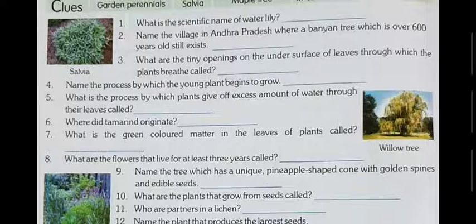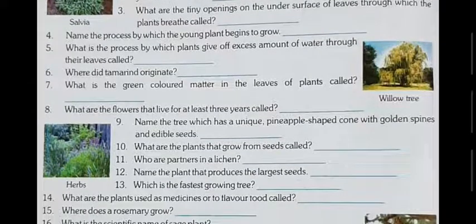Question number six: where did tamarind originate? Most of you may not know the meaning of tamarind — tamarind means imli. It originated in South Asia and Africa.